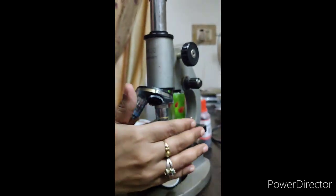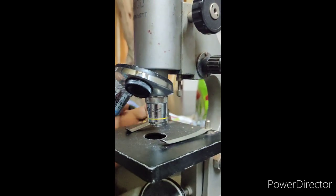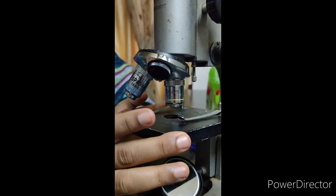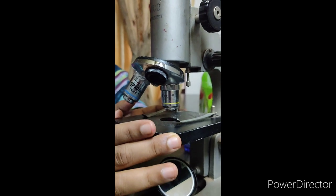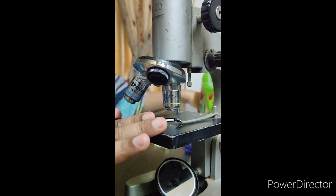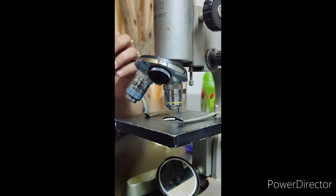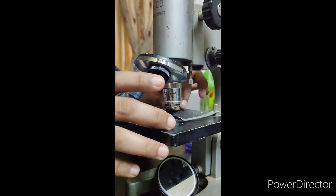Now, where to keep the specimen? Here. This black square piece is known as the stage of the microscope. It is here that we will be mounting our specimen. I am keeping a glass slide so that it will be clear for you.